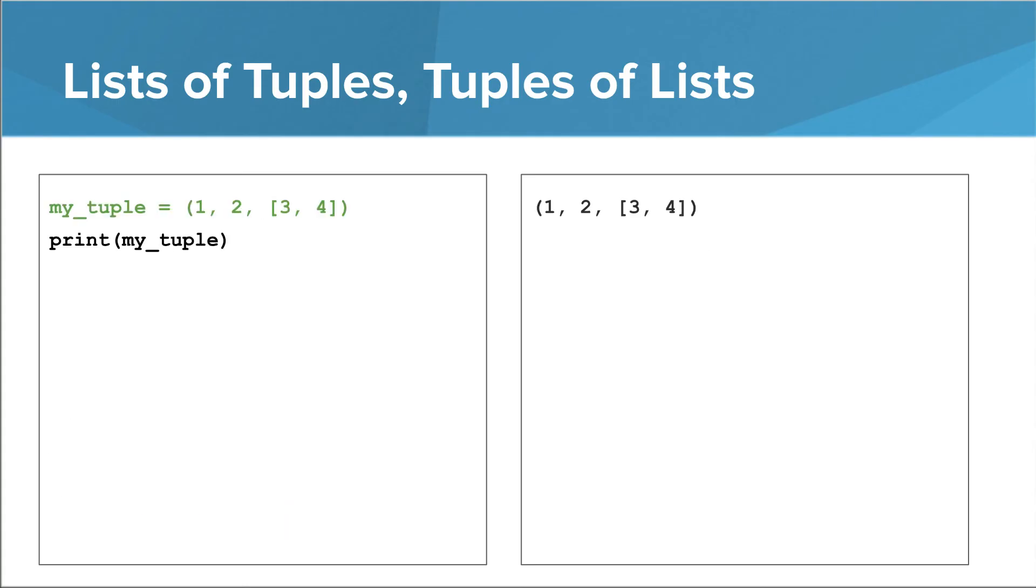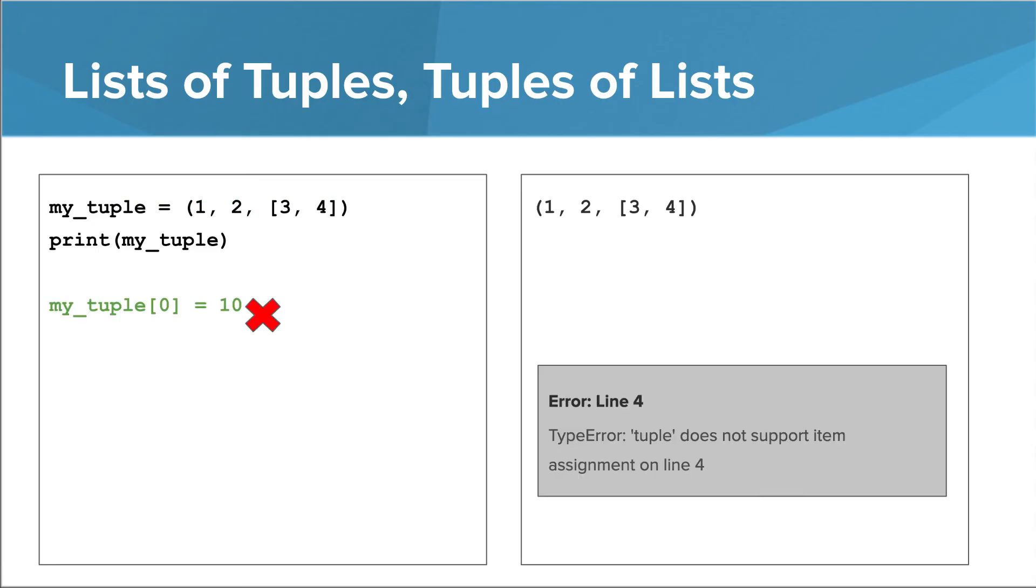Okay, now let's do a switcheroo and make this program have a tuple that contains a list. This case is a little trickier to understand. Obviously, this gets us in trouble. We can't change the thing at index 0 in my tuple. For the same reason, trying to swap out the list at index 2 gets us in trouble.